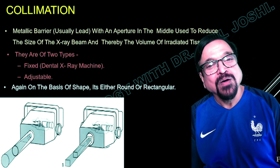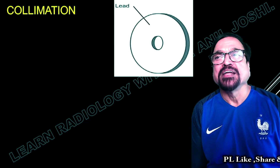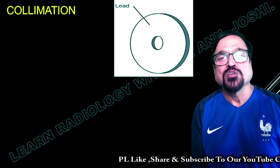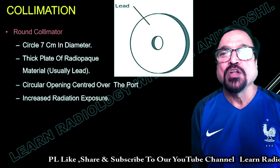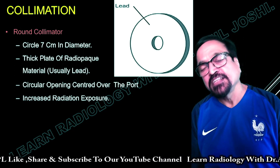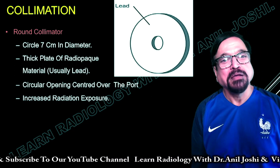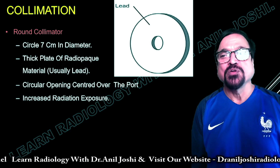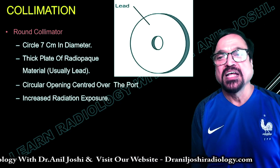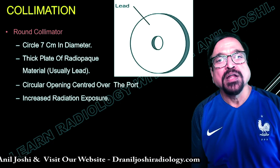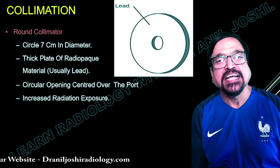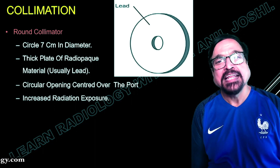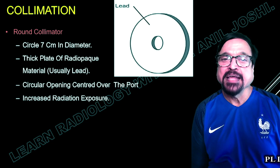On the basis of shape, collimators are either round or rectangular. The lead collimator absorbs the majority of unwanted X-rays, so only the X-rays we want pass through the aperture. Round collimators are circles of approximately 7 cm in diameter — thick plates of radiopaque material, usually lead, because they block most of the unwanted X-rays. There is a circular opening in the center over the port. The advantage is you get a good quality image, but the disadvantage is you have to increase radiation exposure because only certain X-rays are allowed through. The remaining X-rays coming from the side — causing noise or blur — are filtered out.